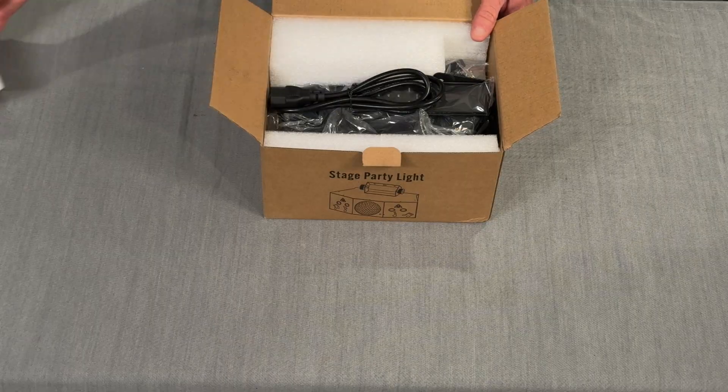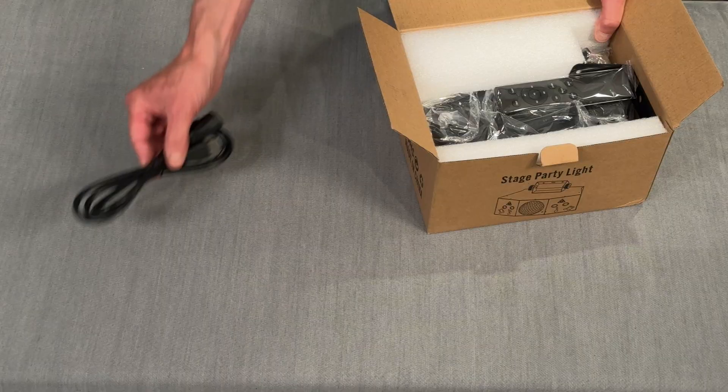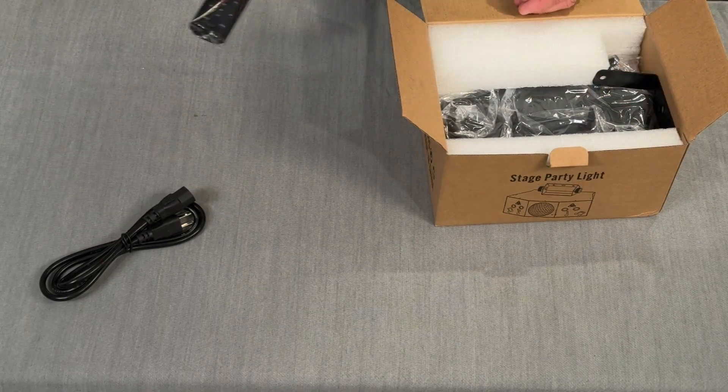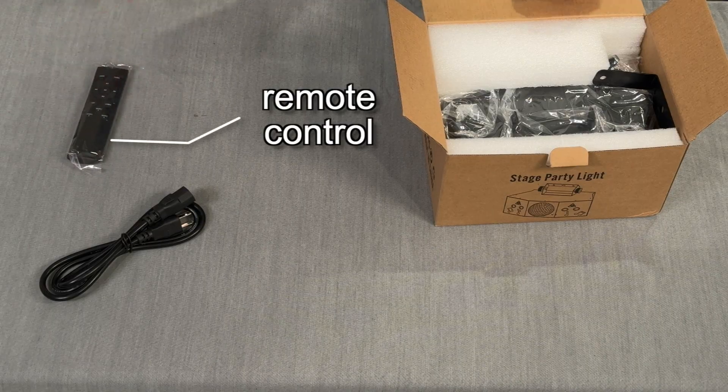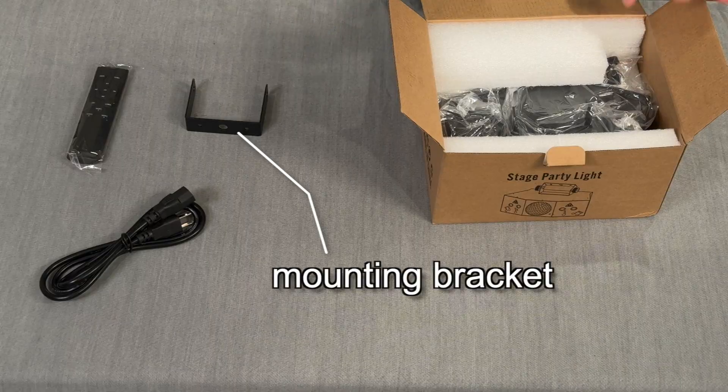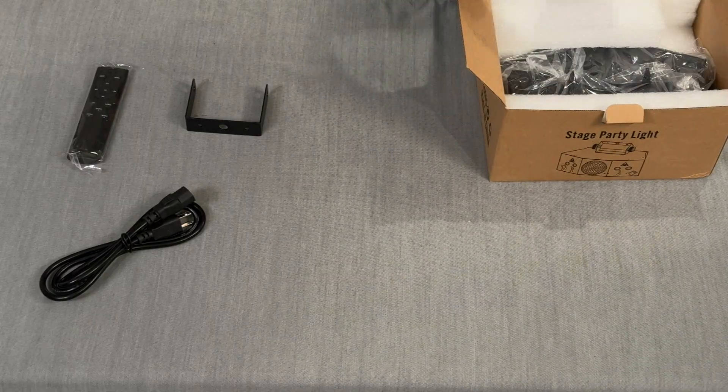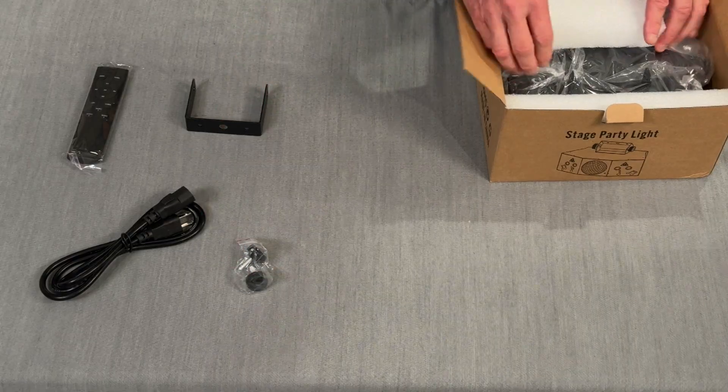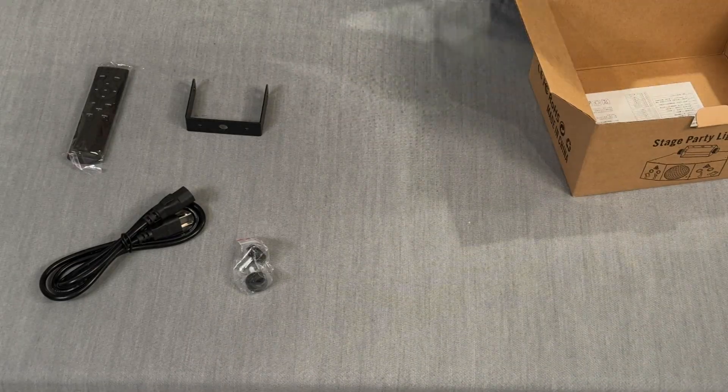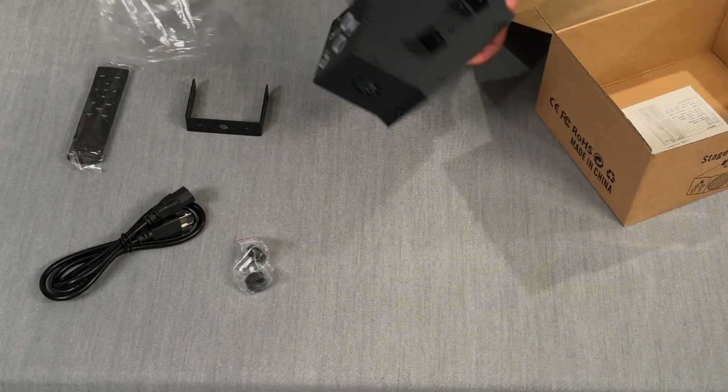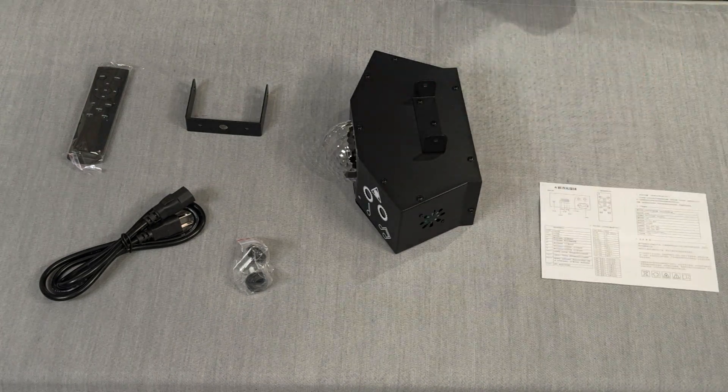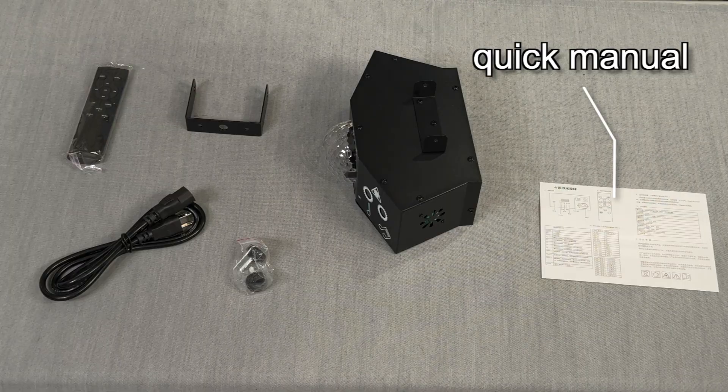Looks like a packing slip. Power cord. Oh cool, it's a remote. Looks kind of like a Fire TV remote. Mounting bracket. Looks like mounting screws. Here's the light. This looks like a quick little instruction manual.